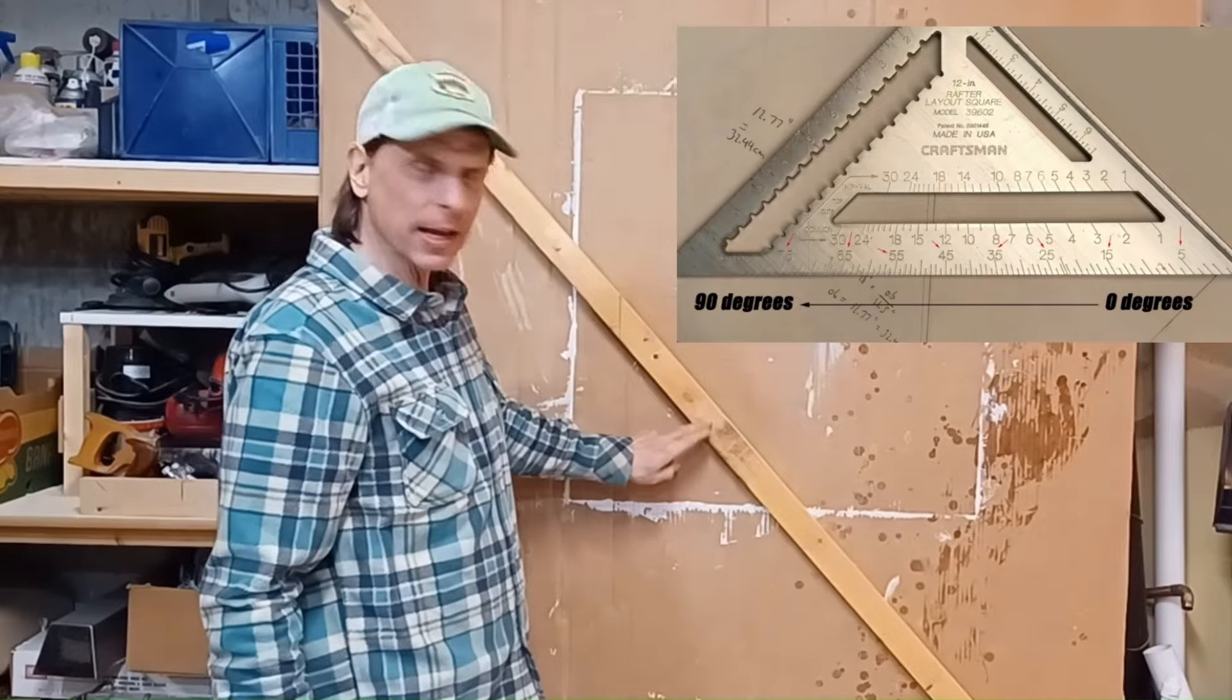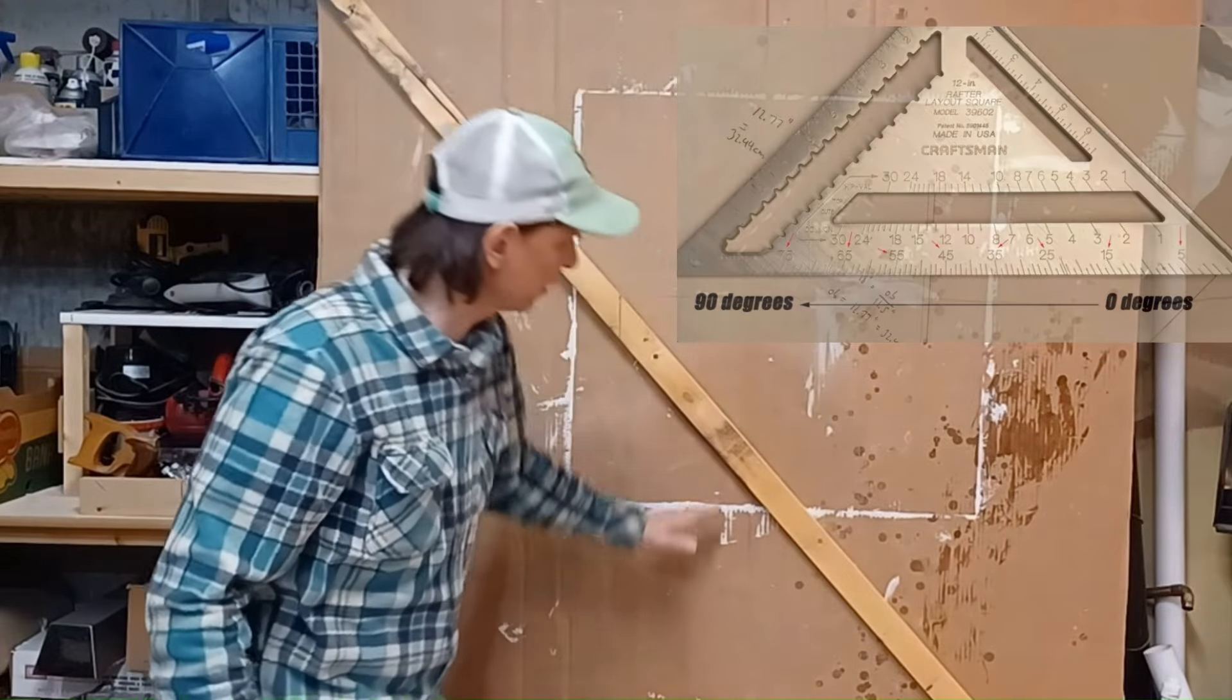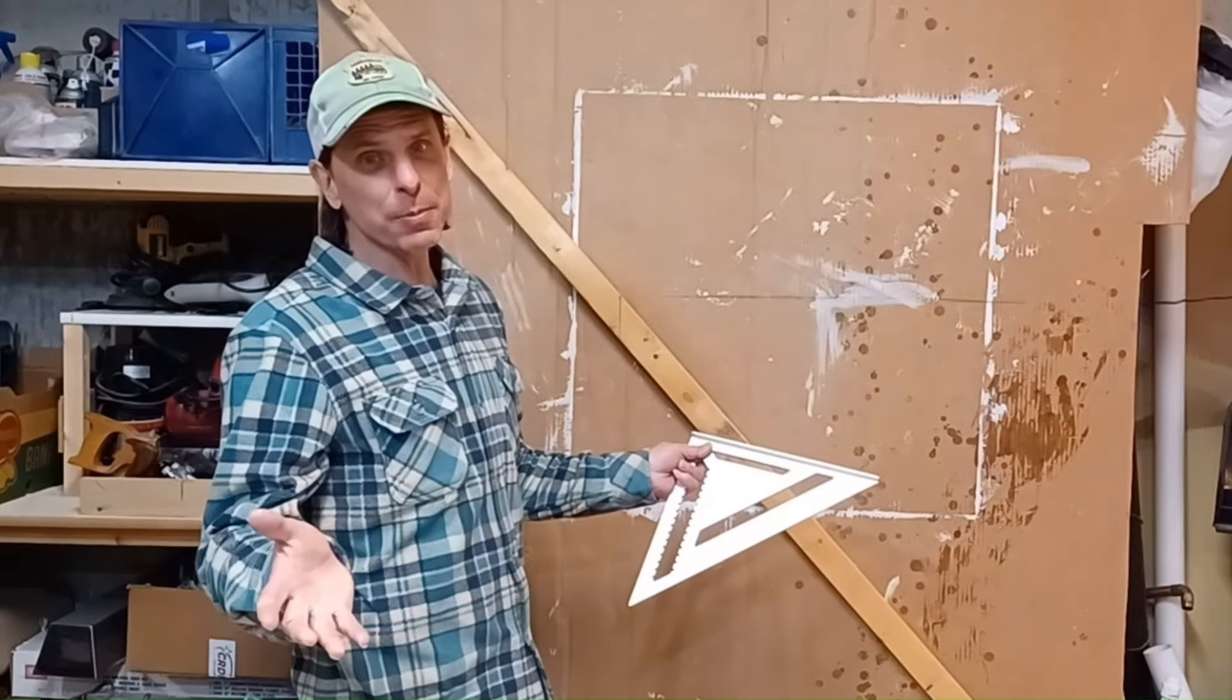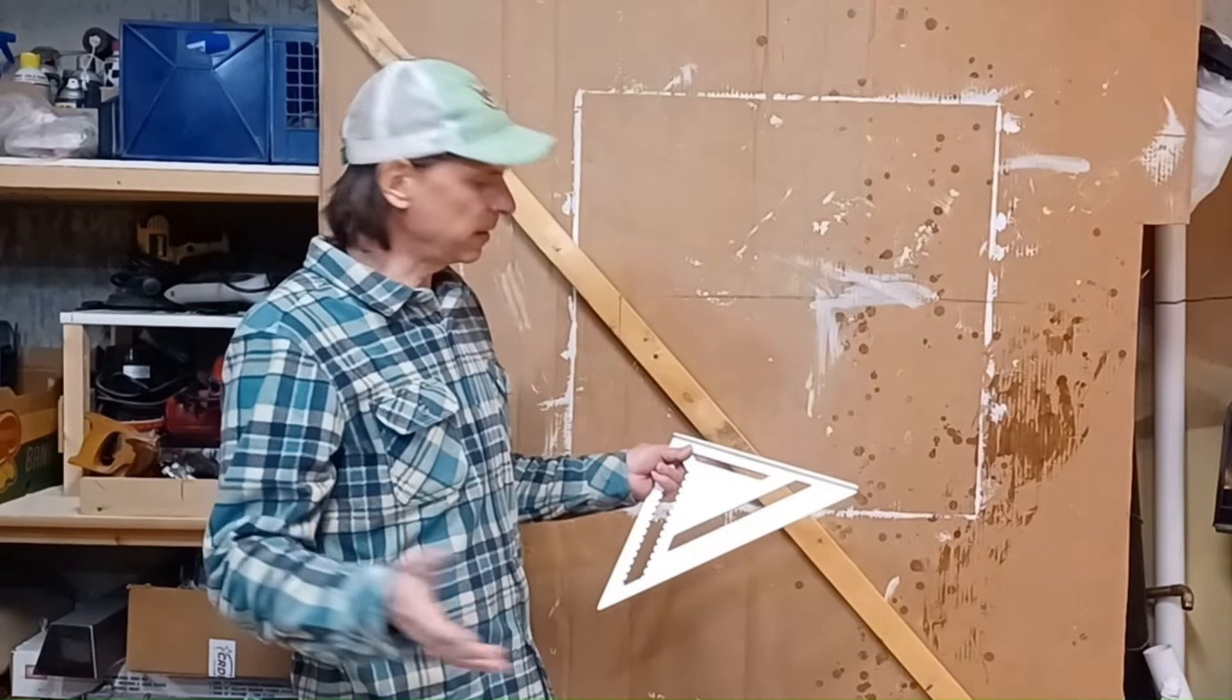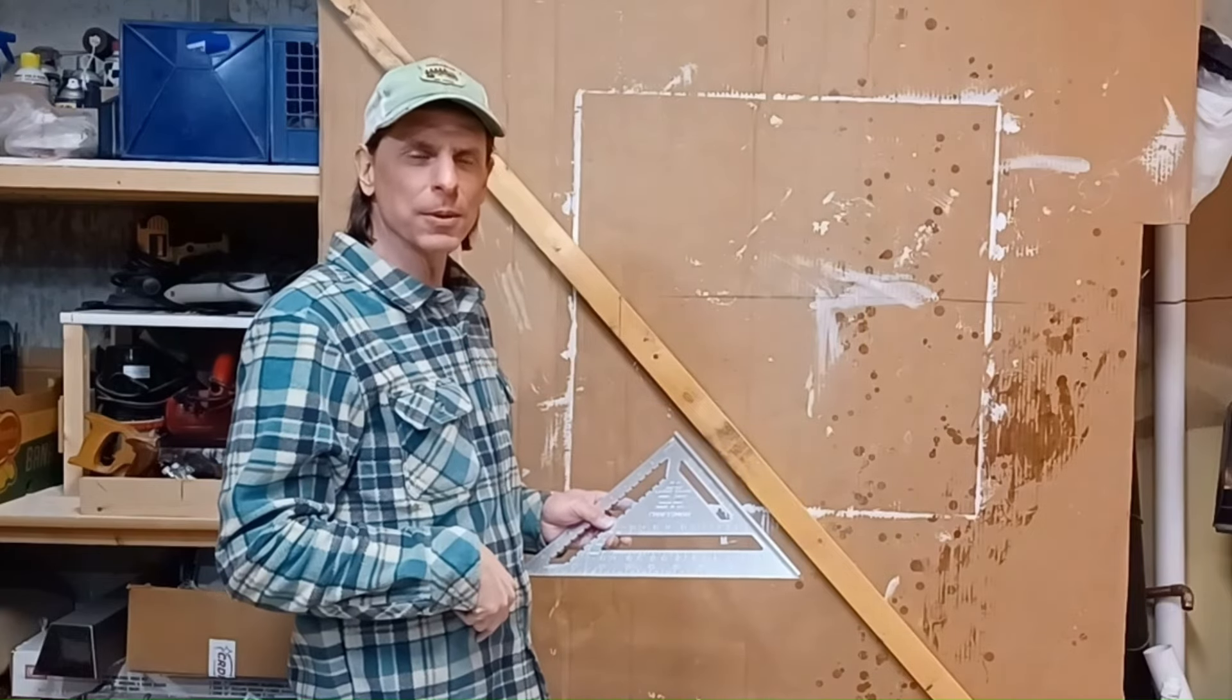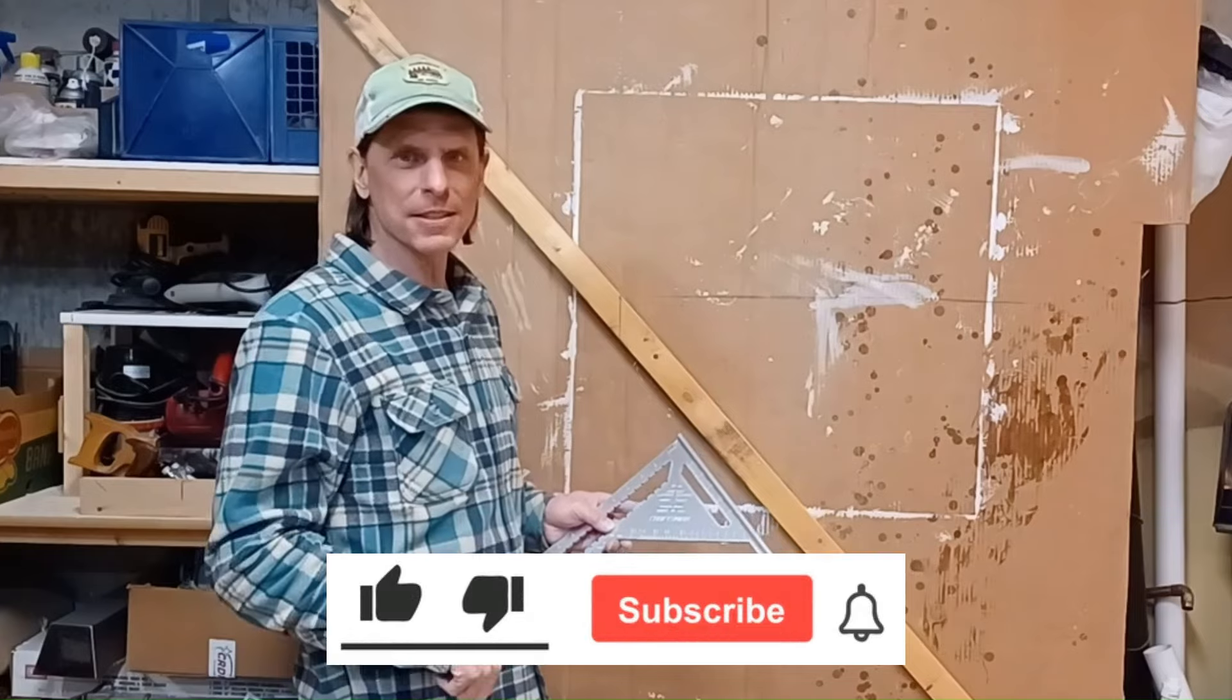So when we have a board like this and we want to measure this angle, we can do that with our speed square. That's a pretty common trick. A lot of people know that. But do you know the math behind it and what makes that possible? I'm going to explain that today.